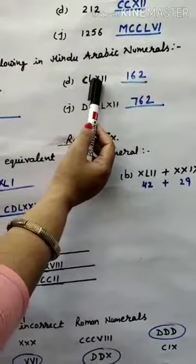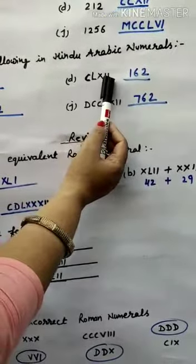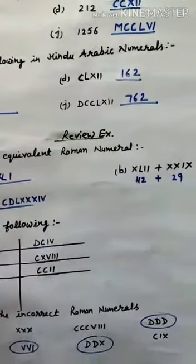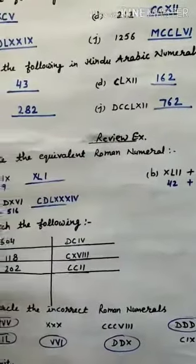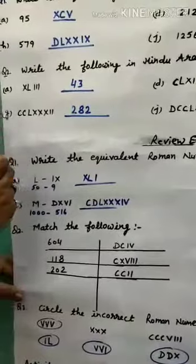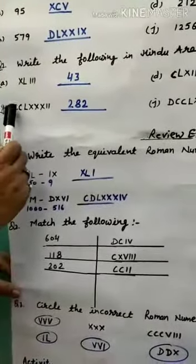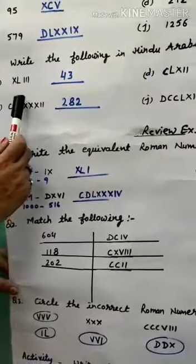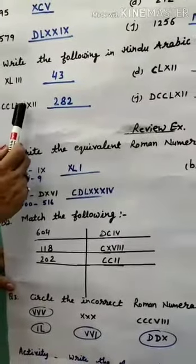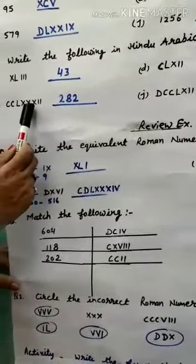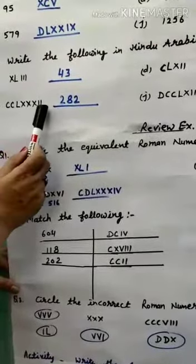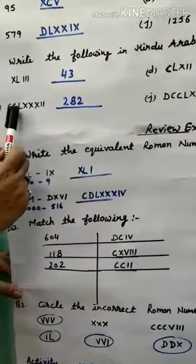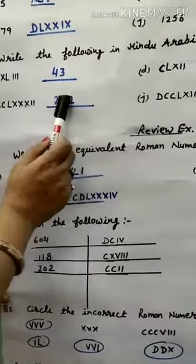Next: C means 100, L means 50, so CL is 150. Add X (10) to get 160, then add II (2) to get 162. For CCLXXXII: CC is 200, L is 50, XX is 20, X is 10, so that gives 280 plus II which is 282.